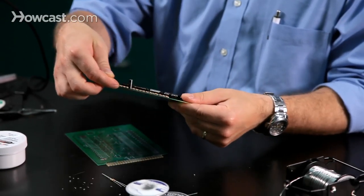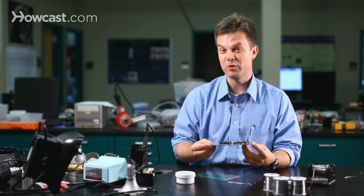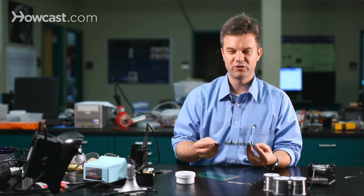Holding the layers apart is an insulating layer known as FR4. FR4 is fiberglass, which is glass fibers laminated together with epoxy resin.